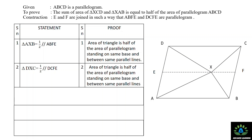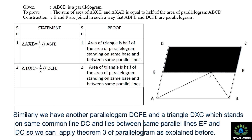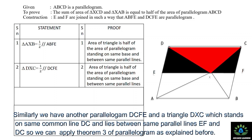Statement 2: Area of triangle DXC equals half of the area of parallelogram DCFE. This is Theorem 3 of the parallelogram. Parallelogram DCFE and triangle DXC share the same common base DC, and the two parallel lines are EF and DC.